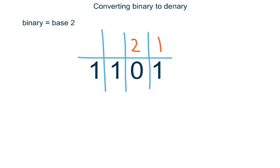We then go up in powers of 2. So 2 to the power of 2, or 2 squared, is 4. 2 to the power of 3 is 8. If we had more digits, we would continue with 16, 32, etc.